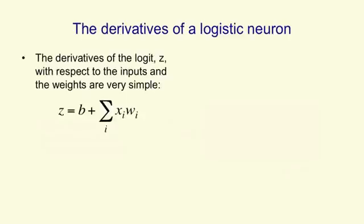The logit is just a bias plus the sum over all the input lines of the value on the input line times the weight. So when we differentiate with respect to Wi, we just get Xi. So the derivative of the logit with respect to Wi is Xi, and similarly, the derivative of the logit with respect to Xi is Wi.